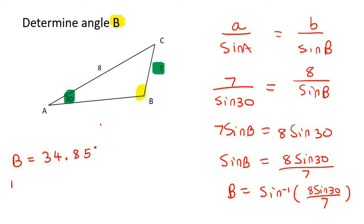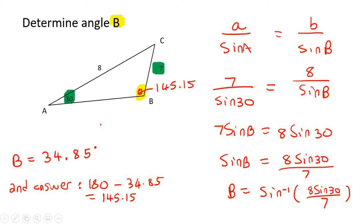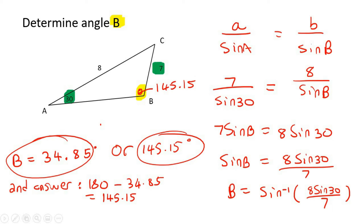Now let's see if there's a second answer. 180 minus 34.85 is going to be 145.15. Could that fit over here? Yes, it actually can. Because if that's 145.15 and you add that to 30, that only gives you 175 — so there's still space for this angle to make 180. So this question has two answers: 34.85 degrees as the first answer, or 145.15 degrees as your second answer.